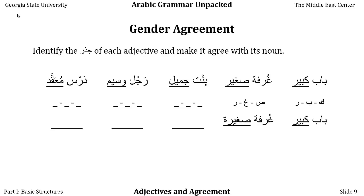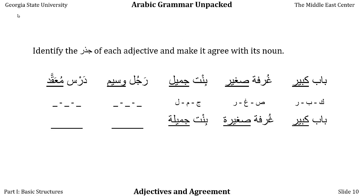In the next example, we have bint — girl or daughter — and jamil, which means pretty or beautiful, to make the phrase 'a pretty girl.' The jidhr of jamil is jim-mim-lam. Because bint is a feminine singular noun representing a feminine singular person, even though it doesn't have ta' marbuta, its adjective needs ta' marbuta. So bint jamila, a pretty girl.